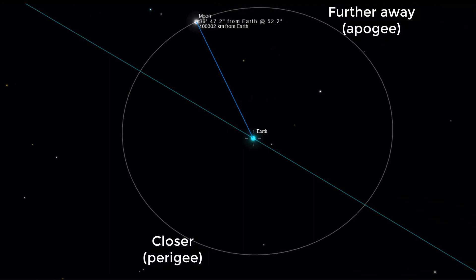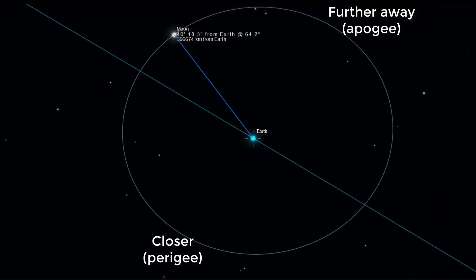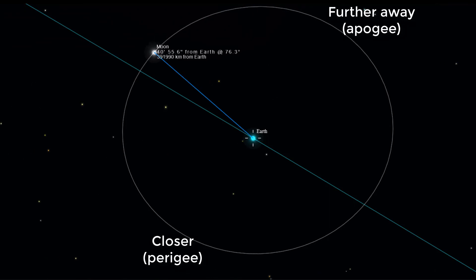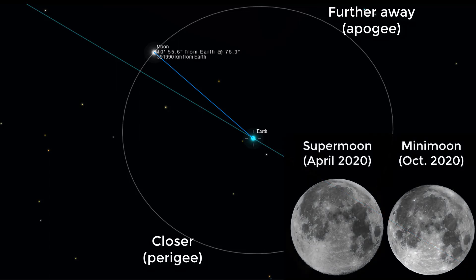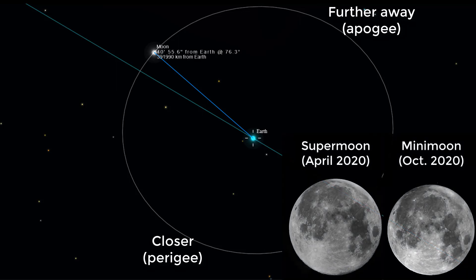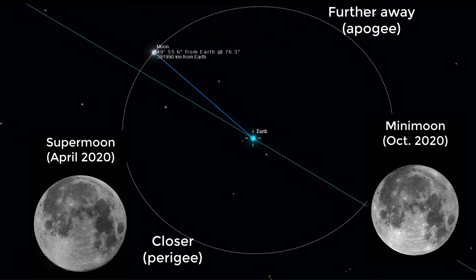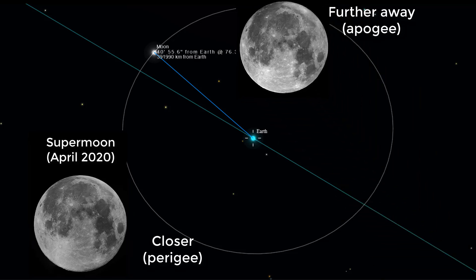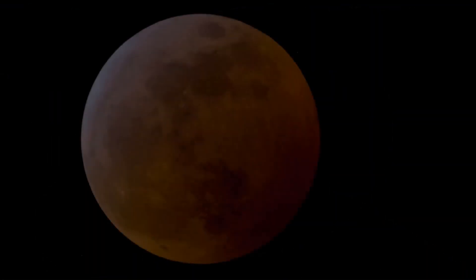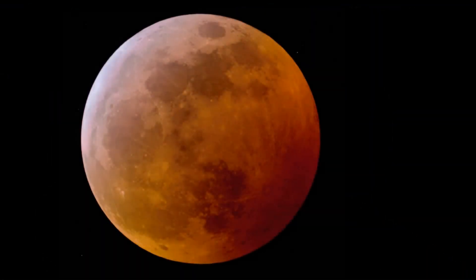By the way, this is also what causes super moons and mini moons. When the full moon occurs close to the time that the moon reaches perigee, we call this a super moon because it appears larger in the sky because it's closer. When the full moon takes place at apogee, the moon is further away and looks smaller in the sky. I go into more depth on this in my video about super moon lunar eclipses, and that video will be linked at the end of this video.